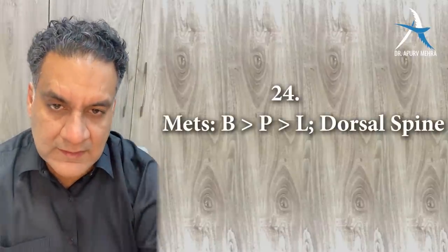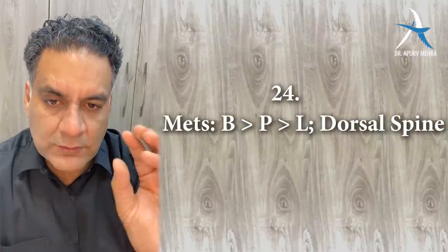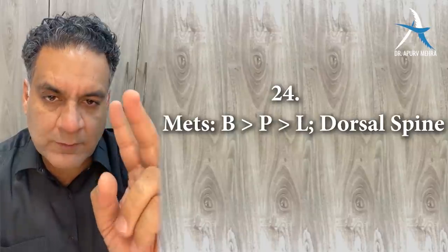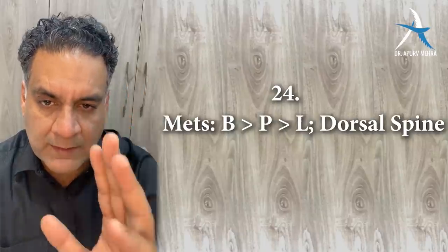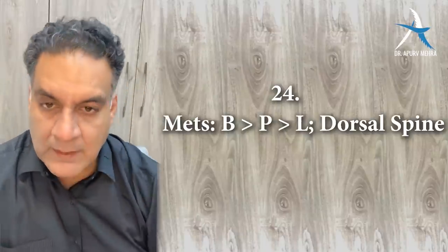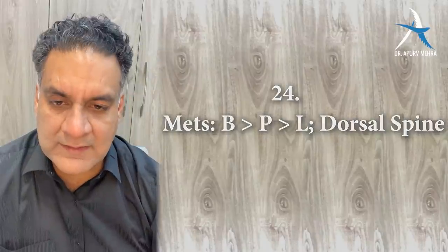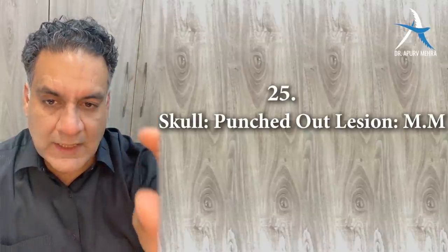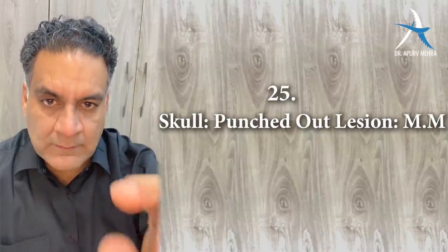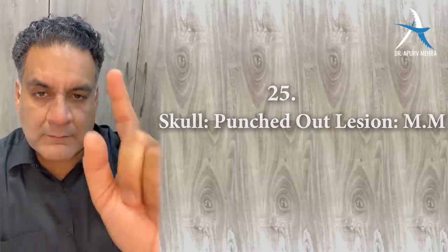Point number twenty-four: metastasis to bone comes from breast, prostate, and lung — BPL. They are most common in the thoracic spine. Point number twenty-five: skull with punched-out lytic lesions — plasma cell tumor, multiple myeloma.